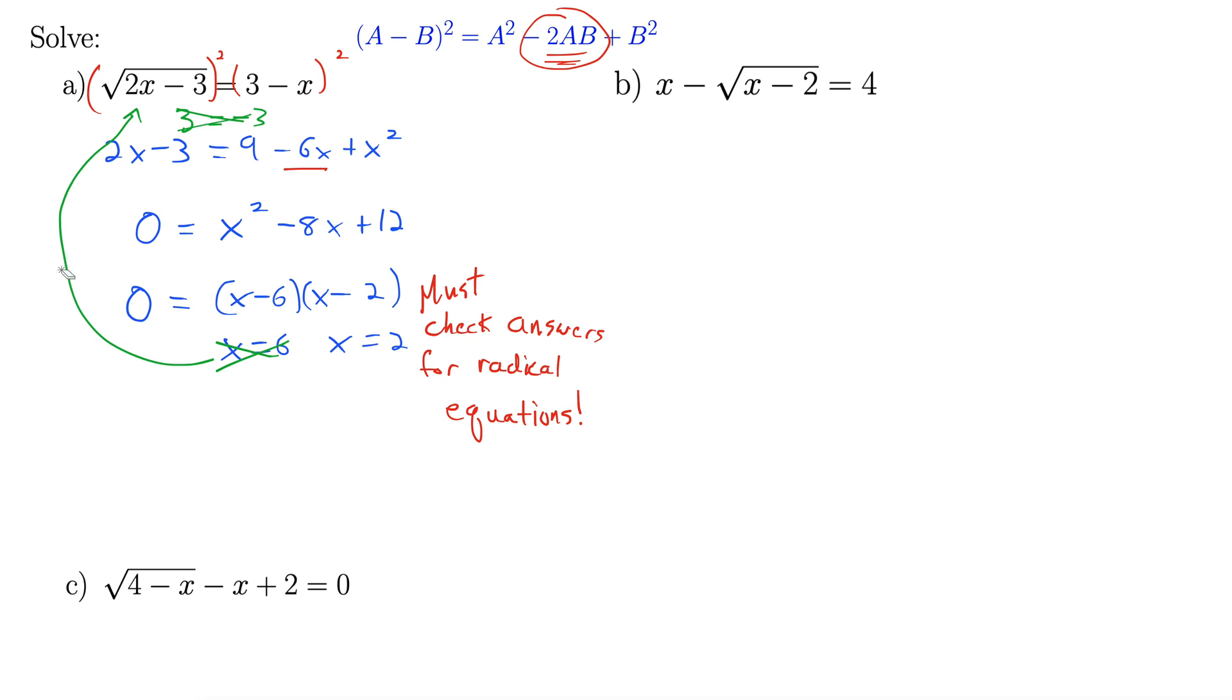Let's check x equals 2. Alright, we're checking it into the same place. So 2 times 2 is 4, minus 3 is 1. Square root of 1 is 1. On the right-hand side, we have 3 minus 2. That's also 1. Check. So x equals 2 does work. Alright, so one solution to that equation.